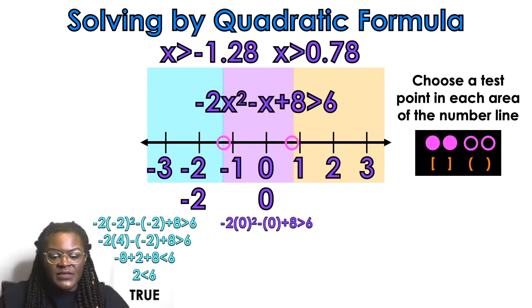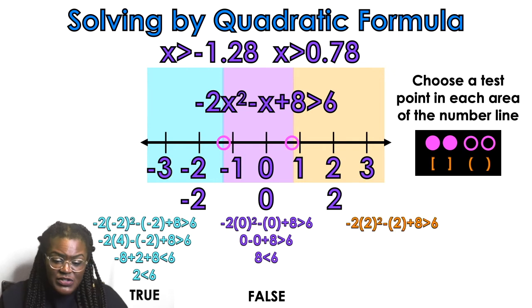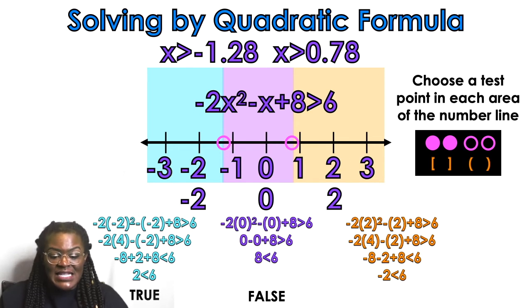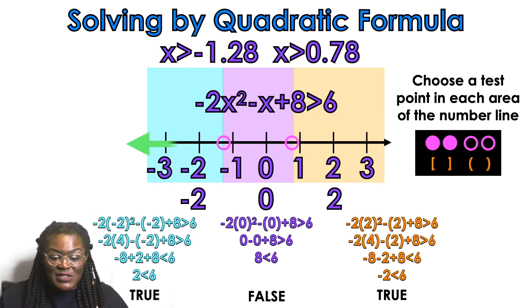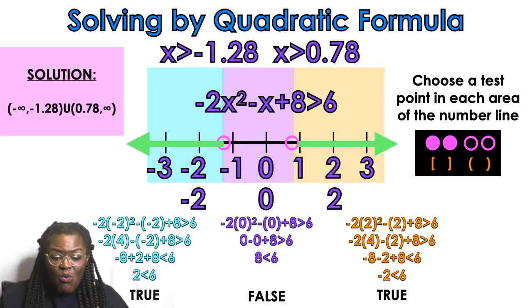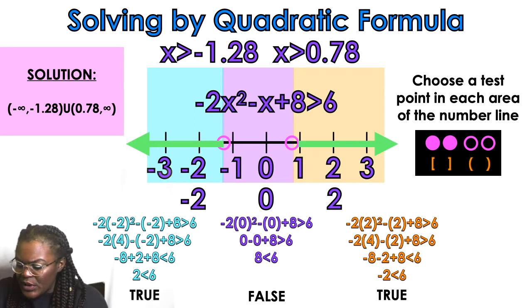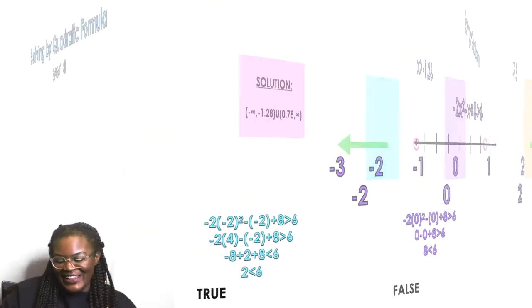For the purple area, I pick 0, plug in the original equation, and get 8 is less than 6 — that is false, so the purple area doesn't work. For the orange area, I pick 2, simplify, and get 2 is less than 6 — that's true. So the blue and orange areas are where my solutions are. Here's the set notation for example one.